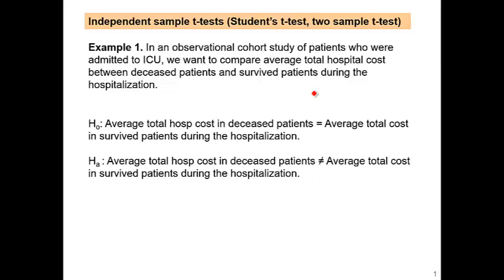So we compute the p-value and try to use it to reject the null hypothesis. We are hoping the p-value is less than 0.05.